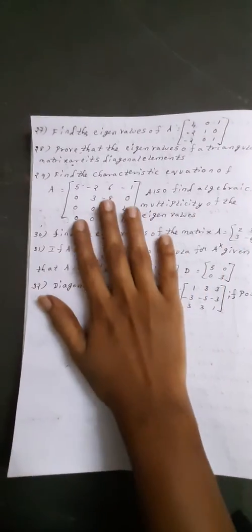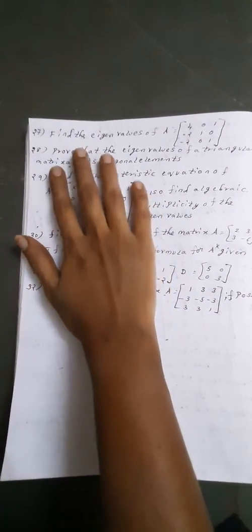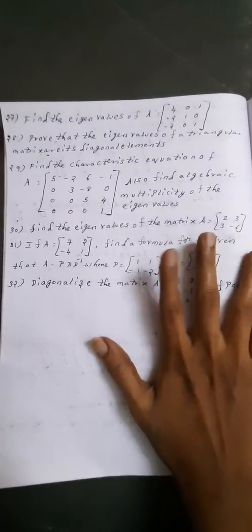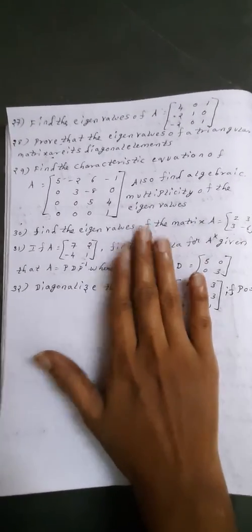This is the last page of second unit. Questions 27, 28, up to 32 questions in this unit. So these are all the important questions. You want to concentrate more on these questions.